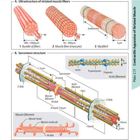For the structure of the sarcomere: at the ends of the sarcomere we have the Z-disc; at the middle of the sarcomere we have the M-disc. The sarcomere has two main fibers: fibers connected to the Z-disc are the actin filament, and fibers connected to the M-disc are called the myosin filament.